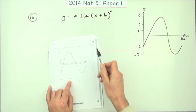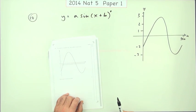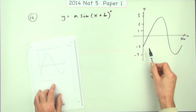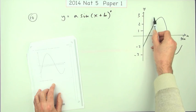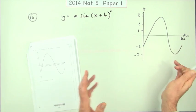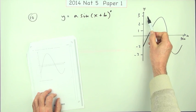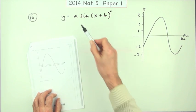Now it just says write down the values of a and b. Well how does this work? Notice it goes up and down the same distance, that's important. Don't just look at the number at the top here, because it may have been shifted up or down. It goes up 3, down 3. So a is 3.